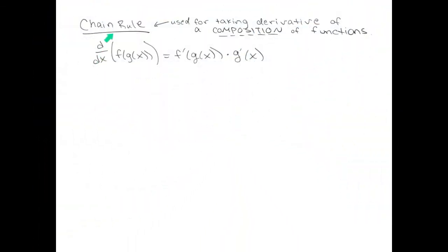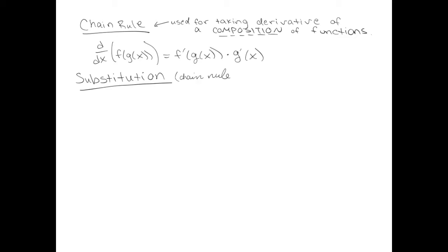The chain rule is for derivatives; substitution is for antiderivatives. Substitution is essentially the chain rule backwards. Remember that the chain rule is a method for taking derivatives of a composition of functions — one function is plugged into the other — and in order to take the derivative of that quantity, we use the chain rule. Since calculus 2 is about taking antiderivatives, let's write down the antiderivative version of the chain rule. It's called substitution.